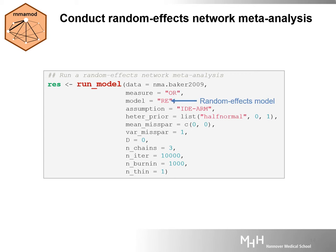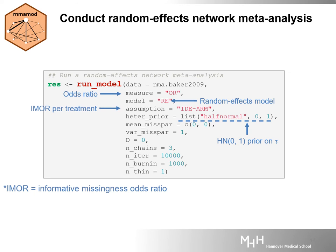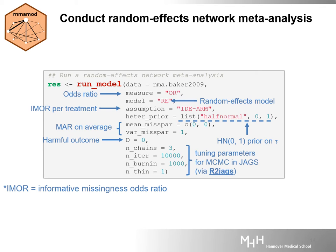Let's run a Bayesian random effects network meta-analysis while addressing the missing participants. The effect measure of interest is the odds ratio. We assign a half-normal prior distribution on the between-trial standard deviation with a scale parameter equal to 1. We will estimate one IMOR parameter for each intervention in the network. The model operates under the MCAR at random assumption on average, with a variance equal to 1. The outcome is harmful. The RunModel function runs in JAGS via the R2JAGS R package. Do not forget to assign a name to the function, here under res, to be used as an object in the other functions of the package.